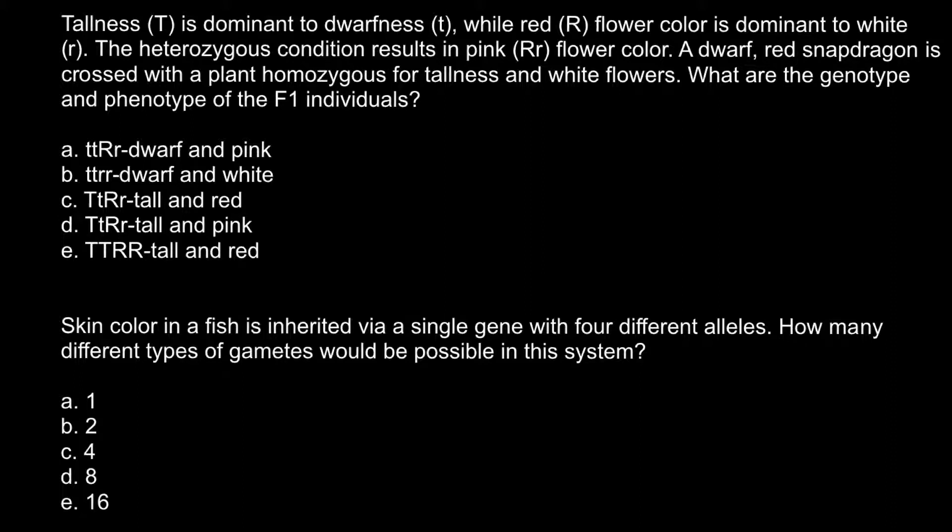Here is the first question. Tallness, capital T, is dominant to dwarfness, small t, while red, capital R, flower color is dominant to white, small r. The heterozygous condition results in pink, capital R small r, flower color. A dwarf red snapdragon is crossed with a plant homozygous for tallness and white flowers. What are the genotype and phenotype of the F1 individuals?